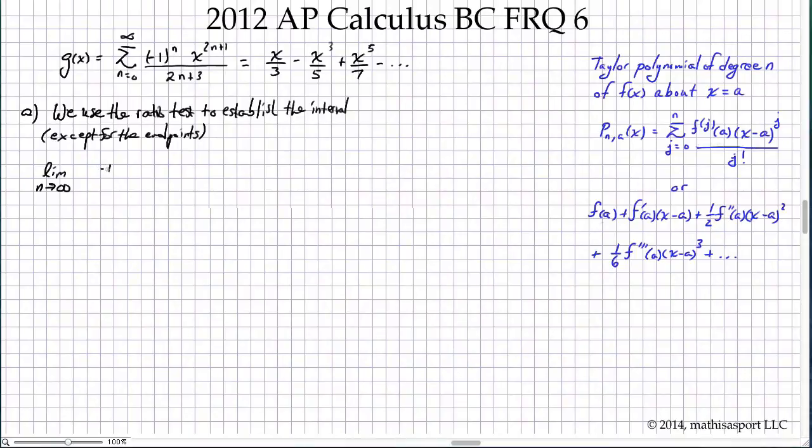We need the limit as n goes to infinity. Now I'll first write down the n+1 term. That's going to be negative 1 to the n+1, x to the... let's be careful here. We need to substitute n+1 here for n. That's going to increase the amount of this exponent by 2, so it's going to become 2n+3. x to the 2n+3.